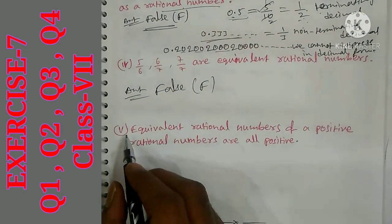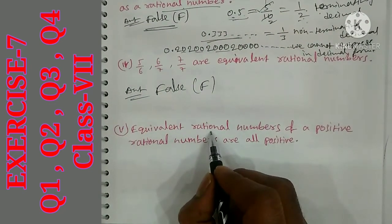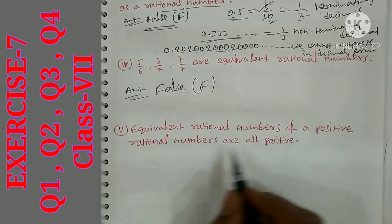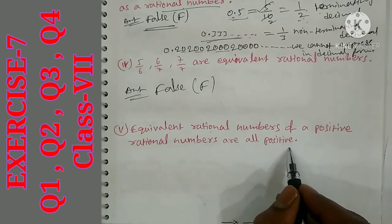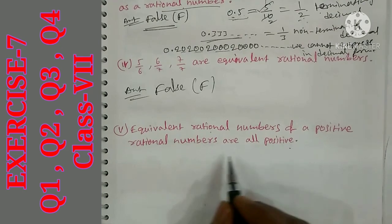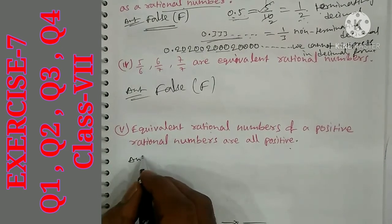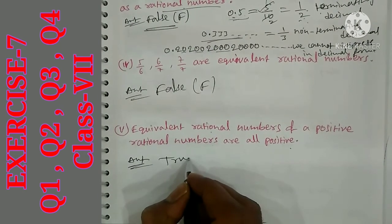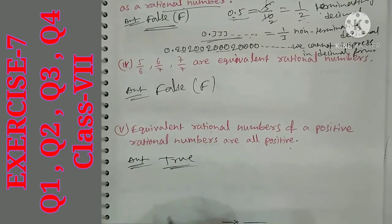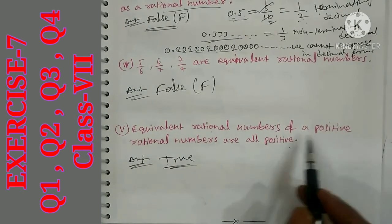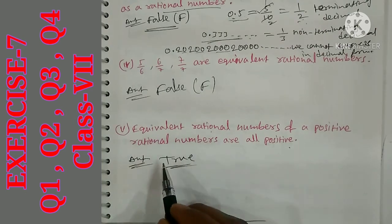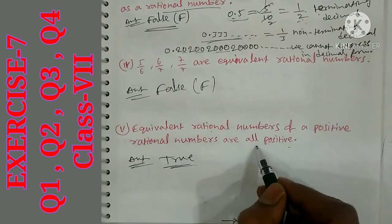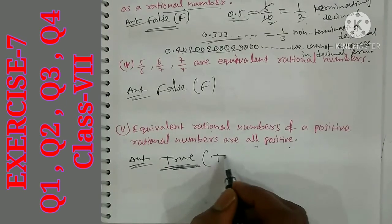Statement 5: equivalent rational numbers of positive rational numbers are all positive. This is true. If all numbers are positive and you multiply by a positive number, the equivalent rational numbers remain positive.